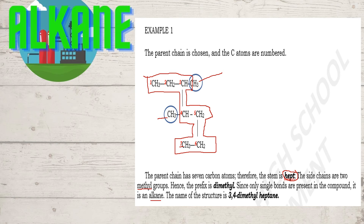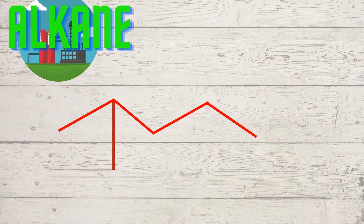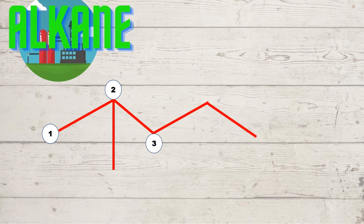Now let's try to use a line diagram or skeletal diagram to represent the carbon atoms. Take note that each point of the line diagram contains a carbon atom. So you have carbon 1, carbon 2, carbon 3, carbon 4, and carbon 5.